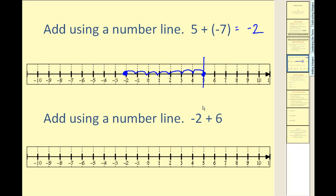For negative two plus six, we're going to start at negative two. And now we're going to move right six units because we're adding a positive six. And we end at positive four. Negative two plus six is equal to positive four.